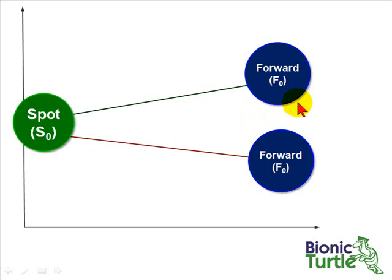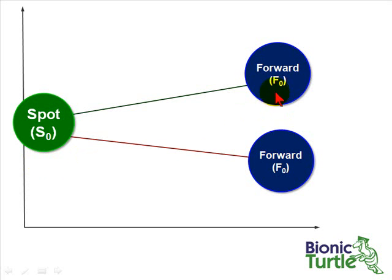Also, we may have the option available to us to enter into a forward or futures contract, and a forward price I'll denote here with F sub zero. What this means is that today we can enter into an agreement, a contract — a promise to either buy or sell the commodity in the future — but we decide that price today. That's why it's F sub zero: the forward price today at time zero. We agree to buy or sell in the future, but the price is known today.